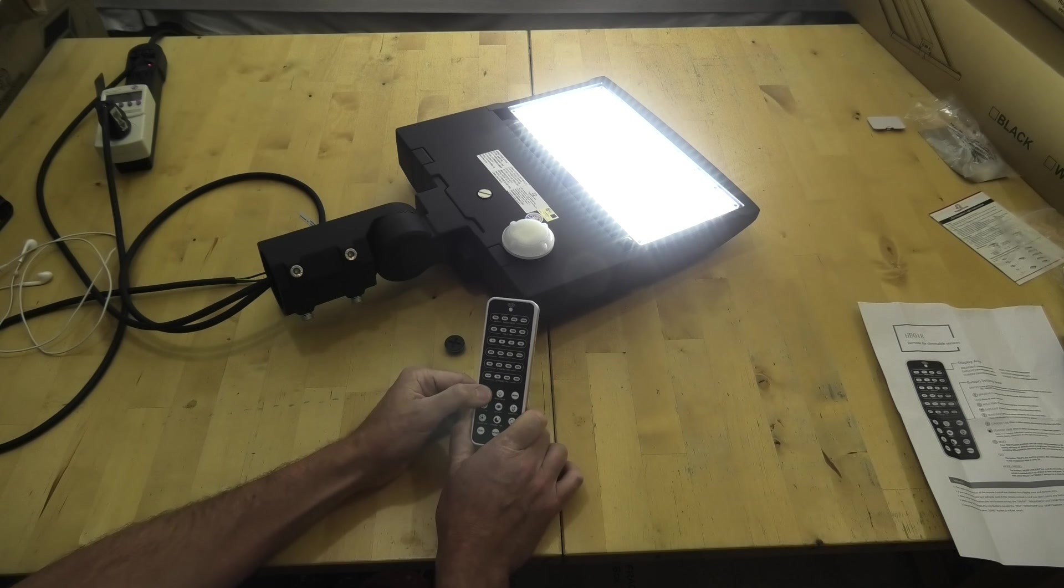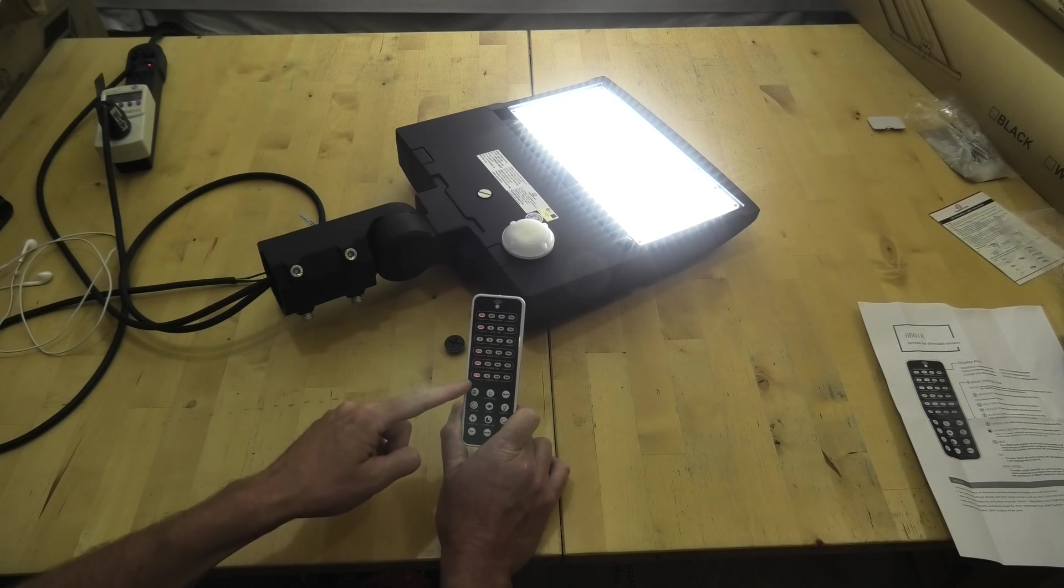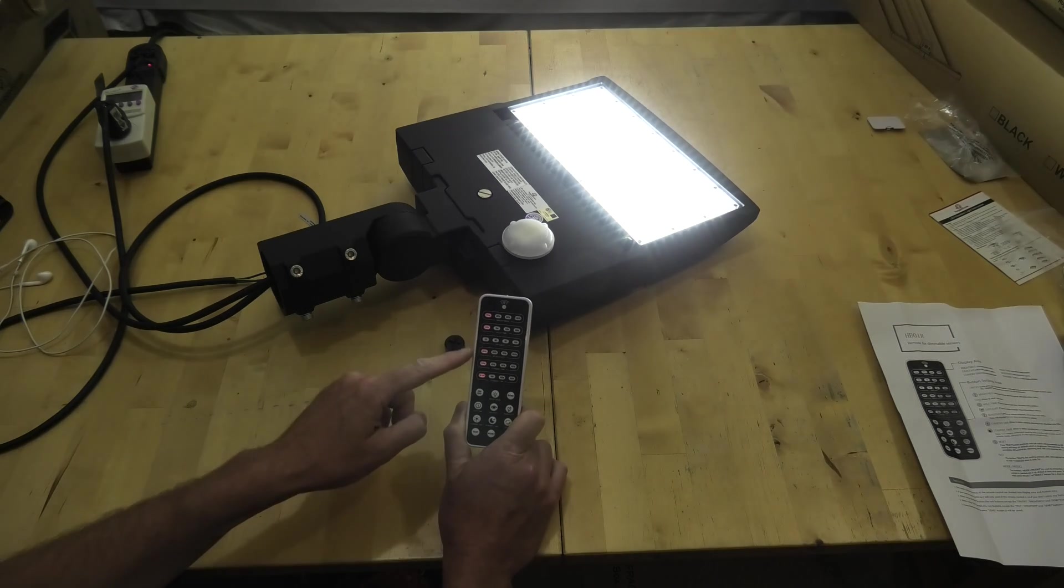So the first thing to know is the on-off button here. The first thing is to turn on the remote. You'll see the buttons light up on the buttons that are active.